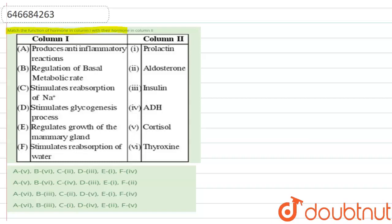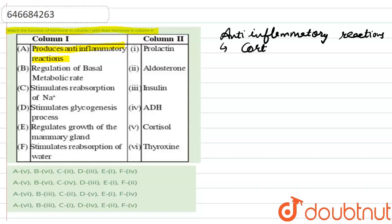The question says: match the function of hormone in column first with their hormone in column second. The first function is to produce an anti-inflammatory reaction. The hormone responsible for anti-inflammatory reaction is cortisol, which is secreted by the adrenal cortex. So option A is related to the fifth option.